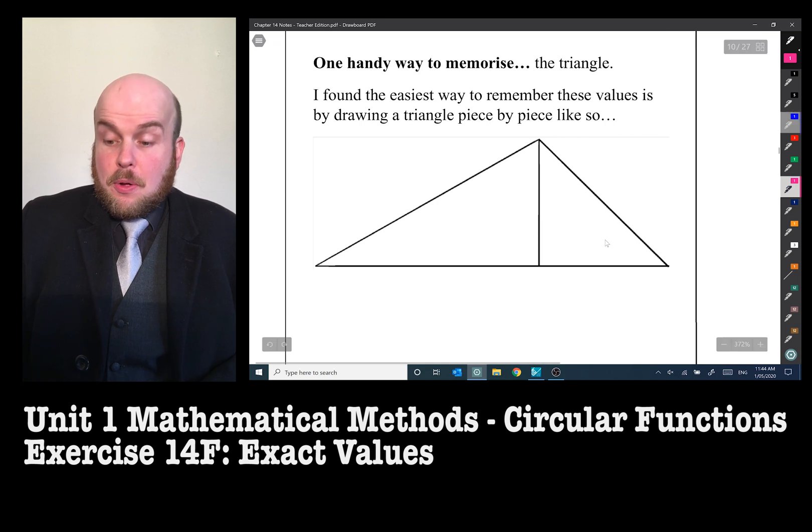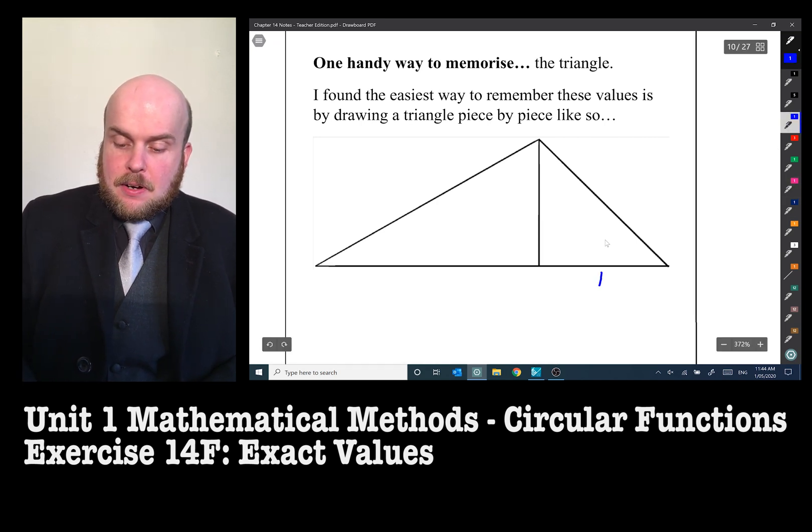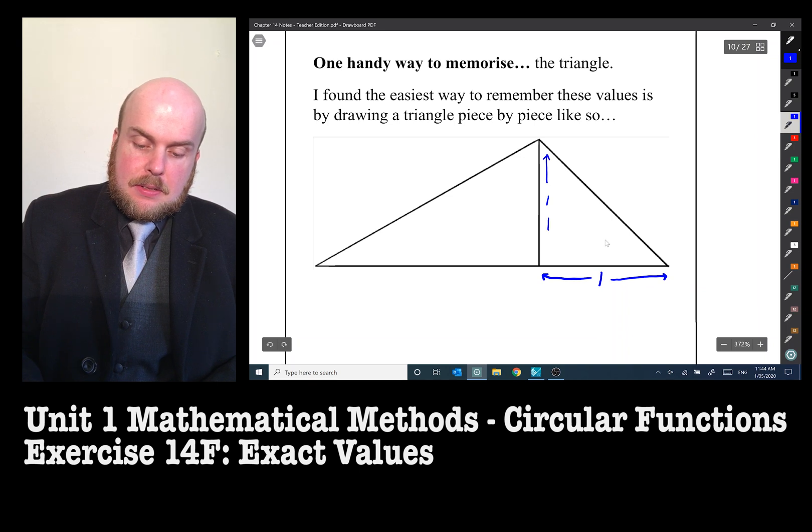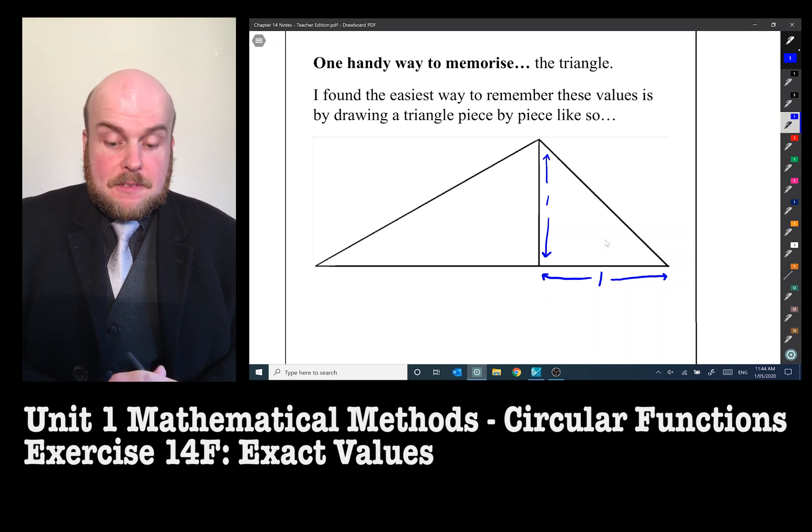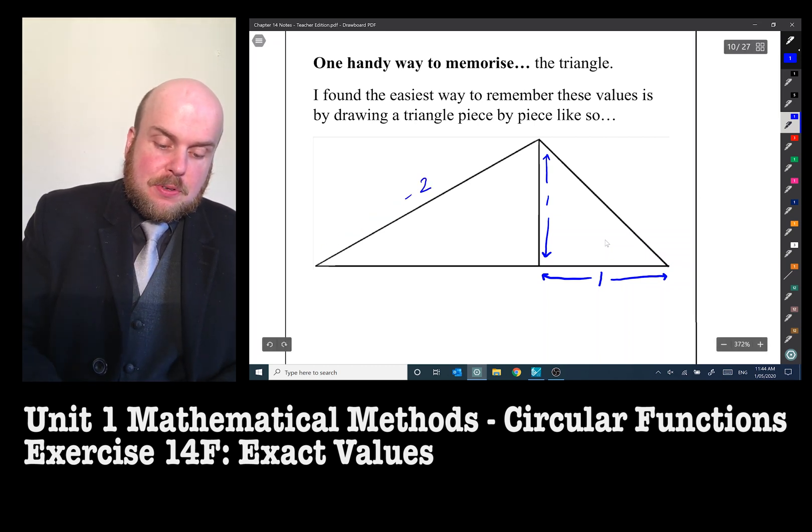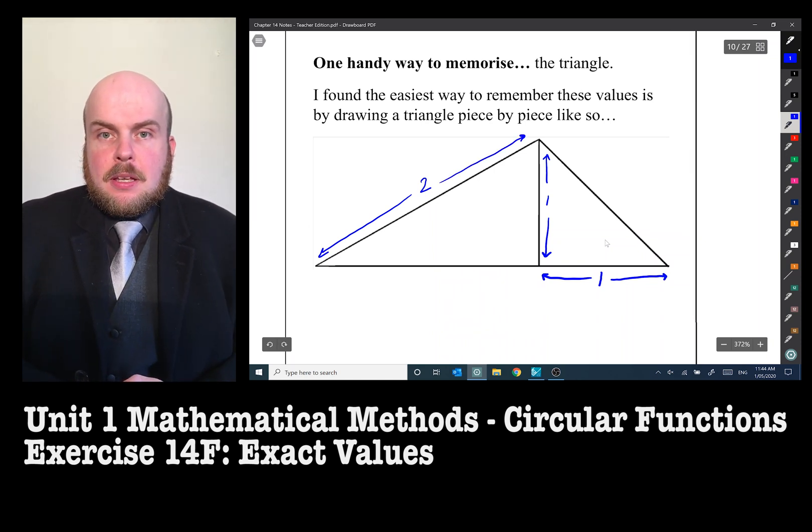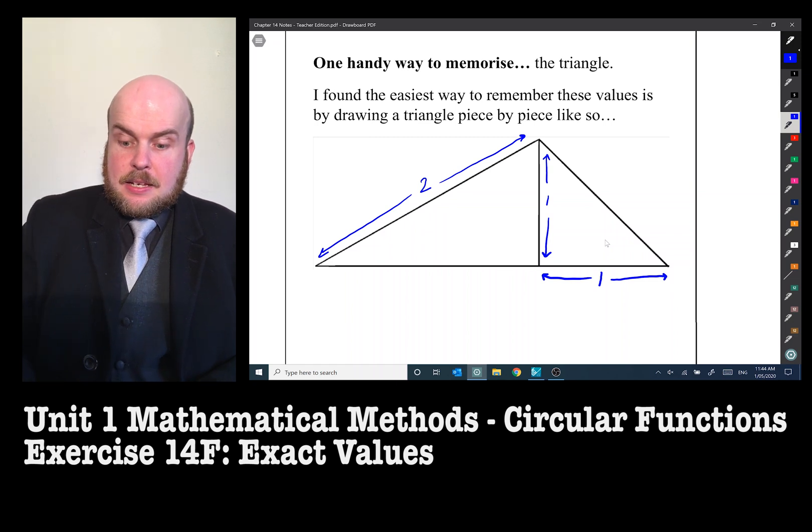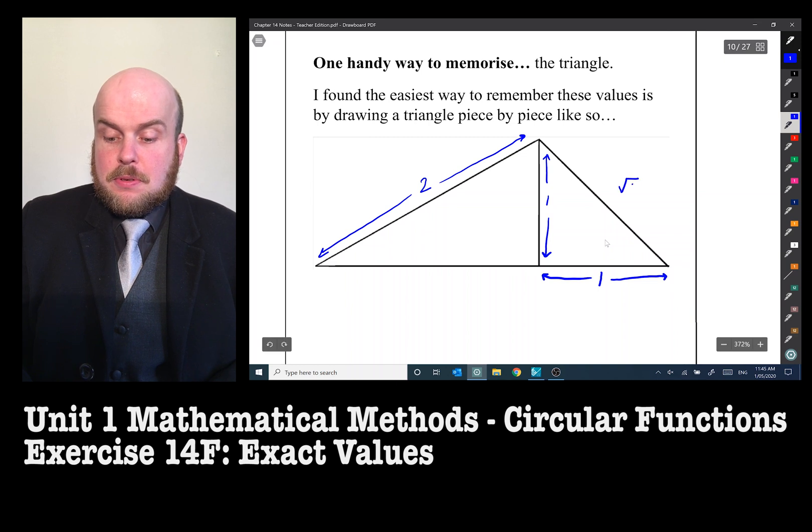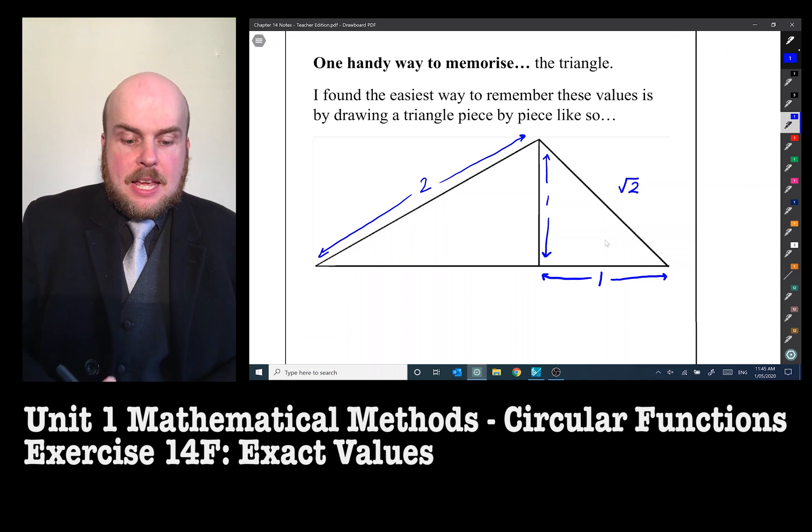The triangle on the right has a base of one and a height of one. The triangle on the left has a hypotenuse of two and it shares that same height of one. So using Pythagoras, I can deduce that the hypotenuse for the triangle on the right is root 2 and the remaining side on the right angle triangle on the left is root 3.